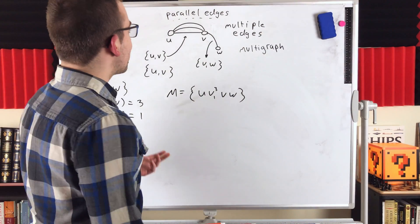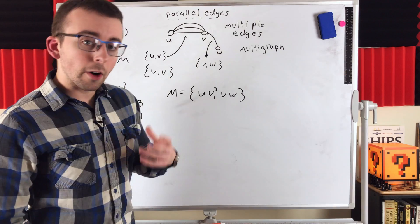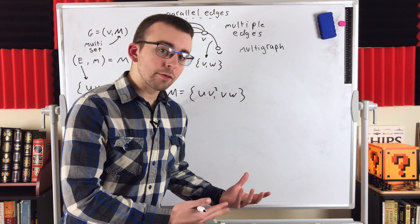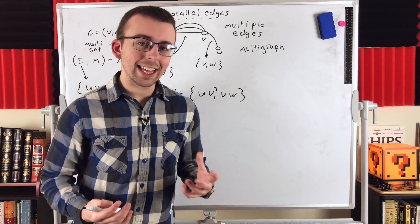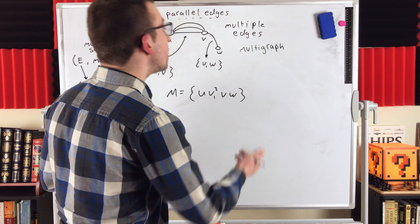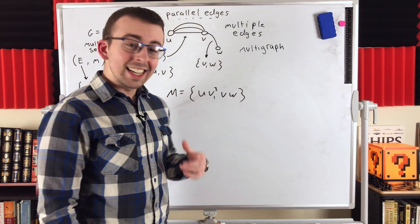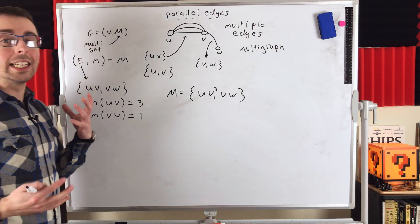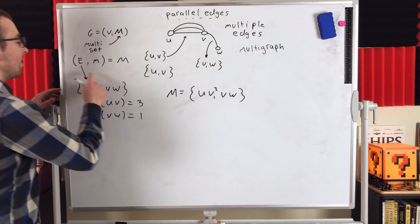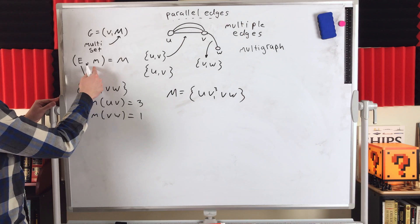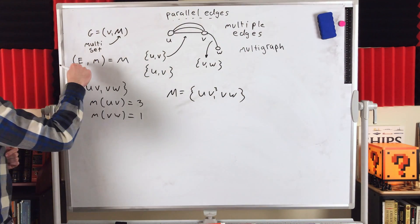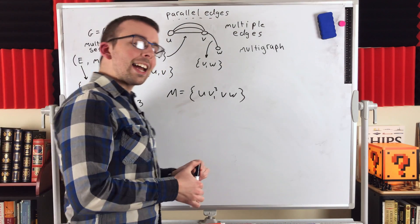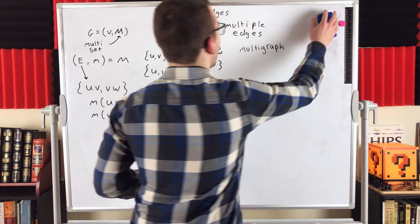So, one more time: parallel edges are edges that have the same end vertices. If a graph allows parallel edges, that graph is typically called a multi-graph. To describe such a graph, a typical edge set won't do — we need a multi-set, equipped with a function m that tells us the multiplicity of the distinct edges in the edge set. Now let's go ahead and get into directed graphs.